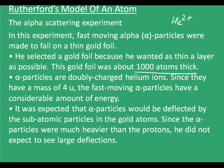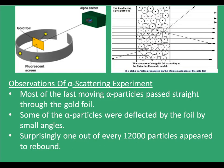Alpha particles are doubly charged helium ions. Since they have a mass of 4U, the fast-moving alpha particles have a considerable amount of energy. It was expected from the experiment that alpha particles would be deflected by the subatomic particles in the gold atoms. Since the alpha particles were much heavier than the protons, large deflections were not expected. But most of the fast-moving alpha particles passed straight through the gold foil. Some of the alpha particles were deflected by the foil by small angles.